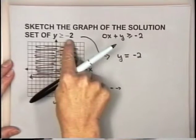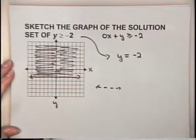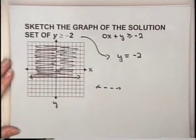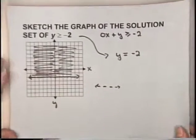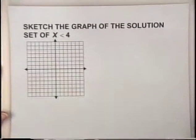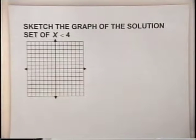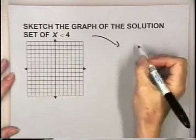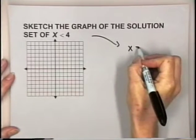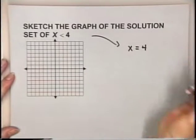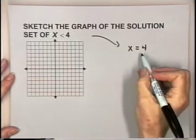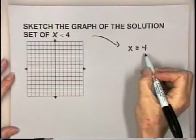When we have an inequality with only one variable, it's usually easy to determine which side of the boundary line to shade. Now let's look at a second example: sketch the graph of the solution set of x is strictly less than 4. My corresponding equation, changing the less than to an equal, gives x equals 4.